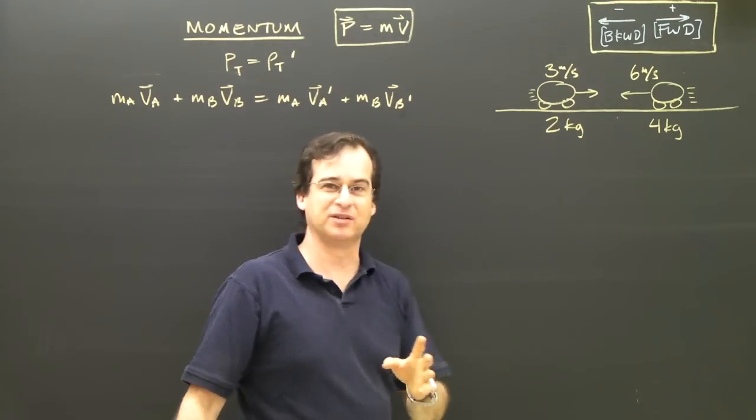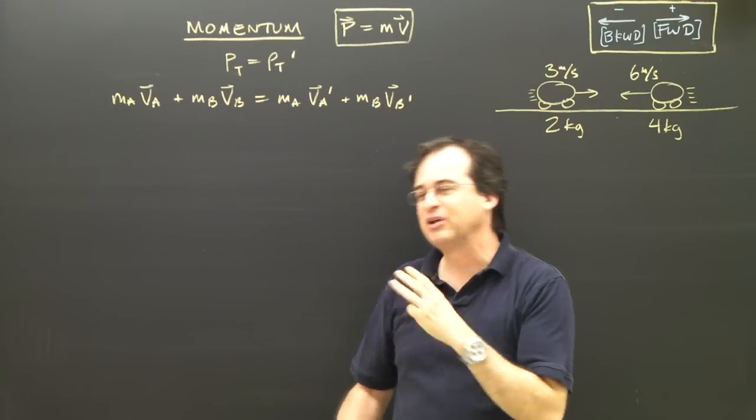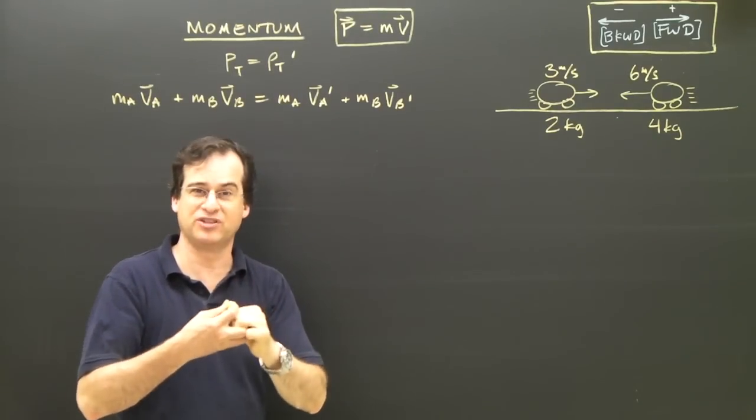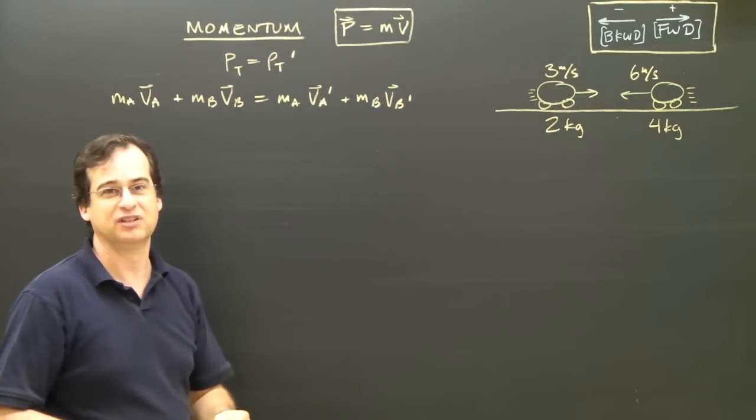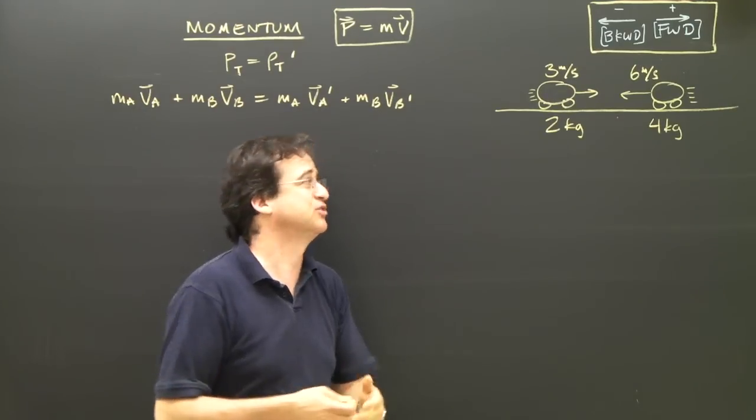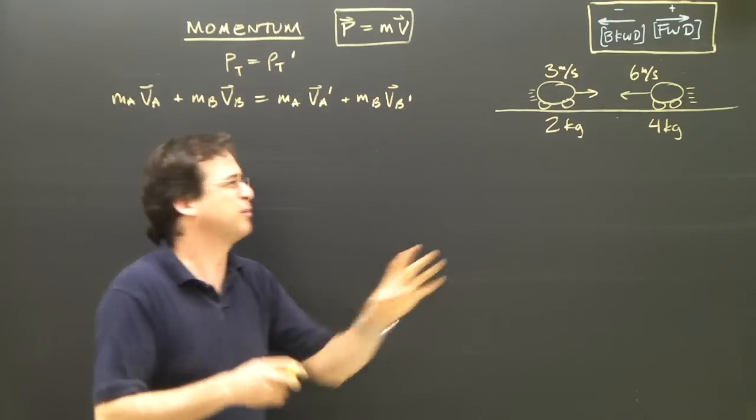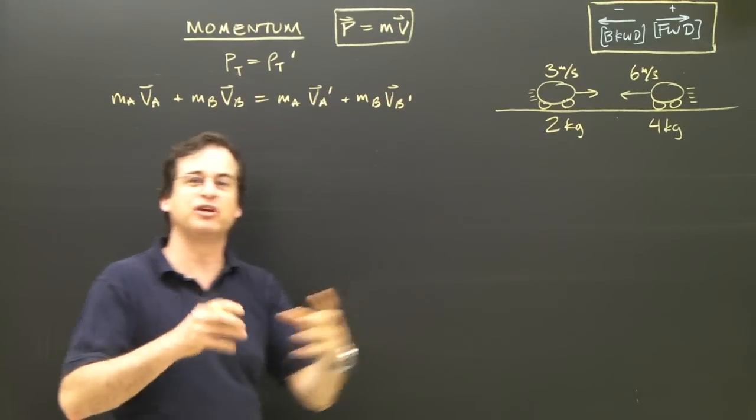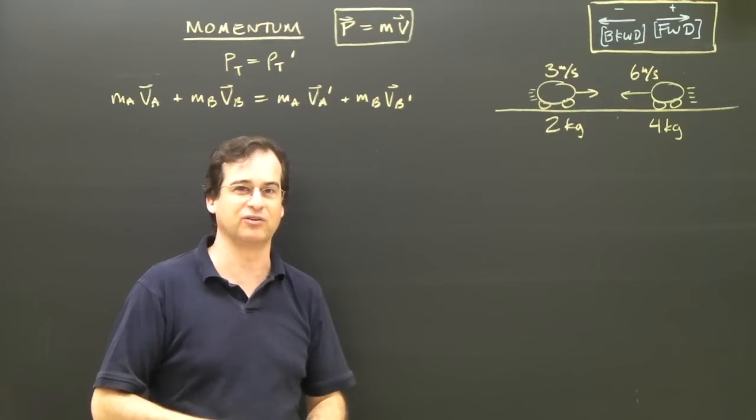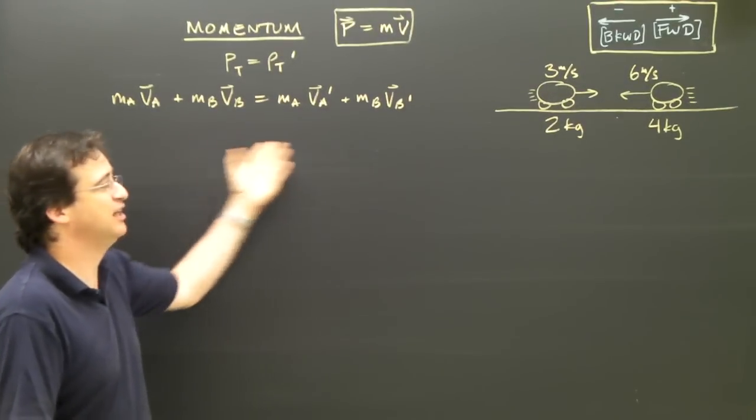Now, with momentum for simple collisions, there's really only three things that can happen. The two objects can collide and they join together, and that's what I'm going to do first. The two objects can collide and they bounce off each other. That's what I'm going to do second. And the third one is we can talk about something different than a collision like this. We can talk about an explosion where something explodes and one piece goes that way and one piece goes the other.